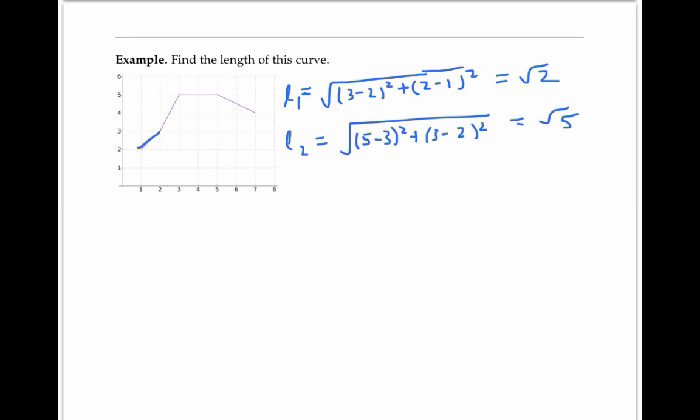We can make similar calculations for the length of the third segment and the fourth segment. Adding these together, we get a total length of twice the square root of five plus the square root of two plus two.